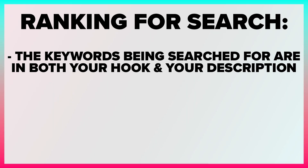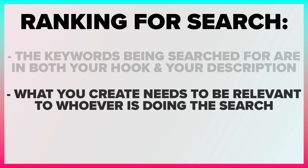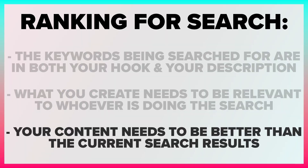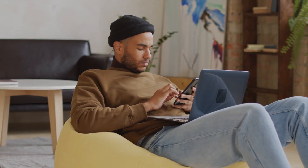In order to rank for search, you only have to hit three metrics. First, the keyword that people are searching for needs to be in your hook and in your description. Second, the content you create actually has to be relevant to somebody doing that search — if it's not, they'll swipe away and decrease its rank. Third, your content needs to be better than the other things that show up for that search. The easiest way to do this is to search the term, see what those videos look like, and make sure your piece of content is better once you create it.